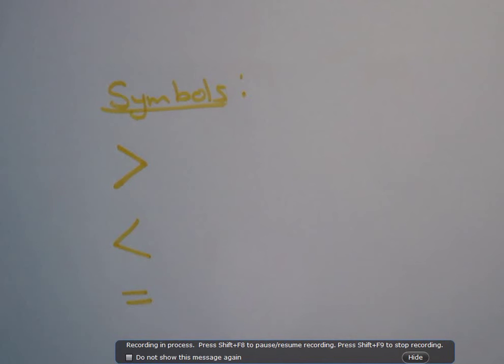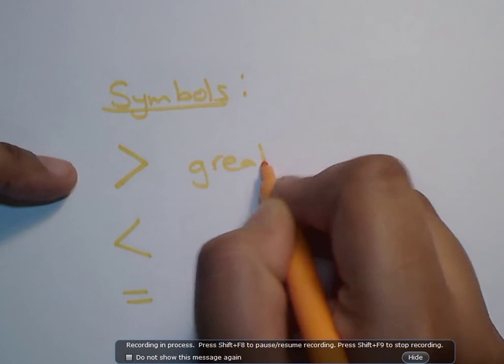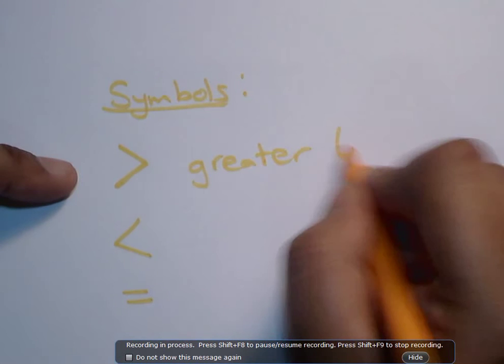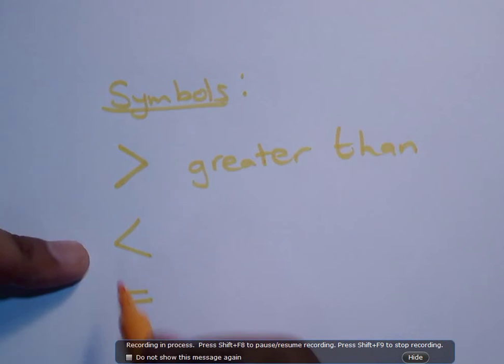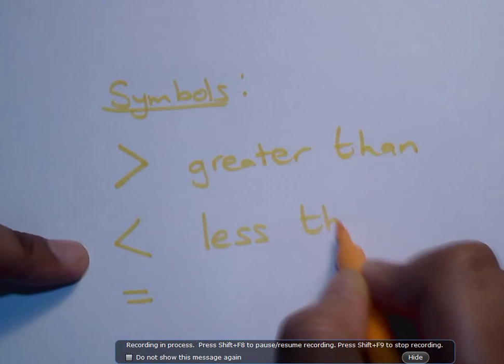The next things we need to know when we are comparing numbers is the symbols we use to compare them. This symbol here means greater than. This symbol that looks like an L means less than. That's an important thing to know.